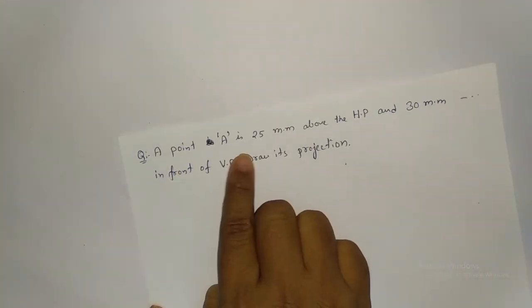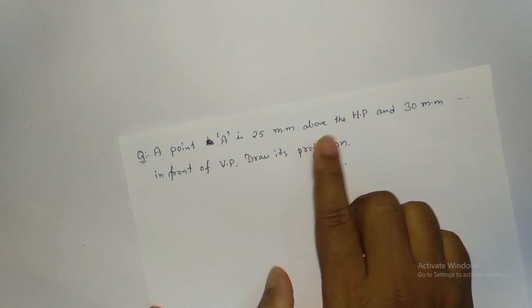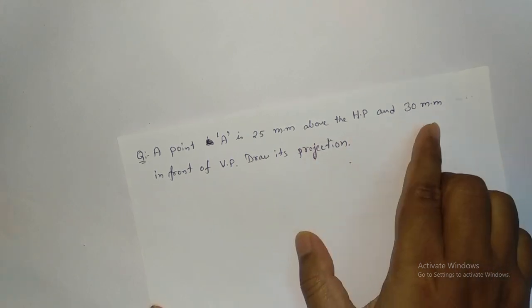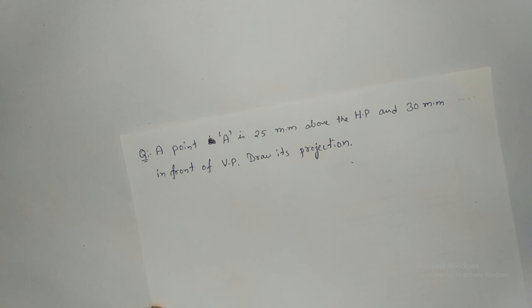Hello viewers. I am going to start projection of points. I have already explained the concept of how you can draw the projections in the introduction to orthographic projections. Similar concepts are going to be used here. This is the first question: point A is 25mm above the HP and 30mm in front of the VP. Draw the projections.